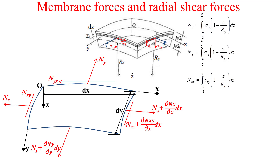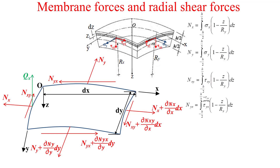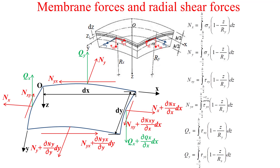The second twisting membrane force nyx is obtained using the same model, and on the other side we have nyx plus the variation of nyx along y. For the radial shear forces, the first one qx is determined using the formula shown in this slide, and on the other side we have qx plus the variation of qx along x. The second radial shear force qy is determined using the same model, and on the other side we have qy plus the variation of qy along y.